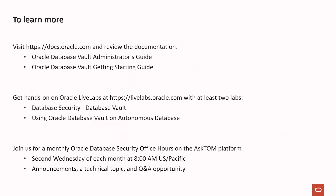To learn more about Oracle Database Vault, please check out our documentation at docs.oracle.com where we have an administrator's guide and a getting started guide. To get hands-on with Oracle Database Vault, you can go to Oracle Live Labs at livelabs.oracle.com where we have at least two labs related to Oracle Database Vault — one for on-premises installations or compute instances of Database Vault, and one for Oracle Database Vault on Autonomous. You can also join us for a monthly Oracle Database Security Office Hours on the Ask Tom platform. We hold this session on the second Wednesday of every month at 8 a.m. Pacific. This session consists of announcements related to Oracle Database Security, a technical topic such as Oracle Database Vault, and a Q&A opportunity with Oracle Database Security Product Management and Development.